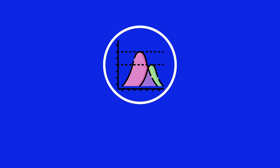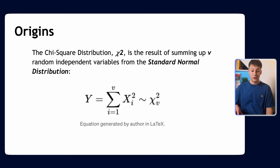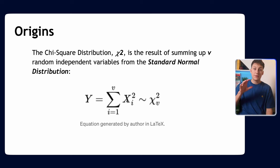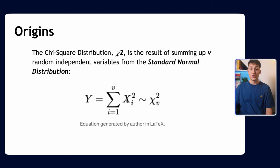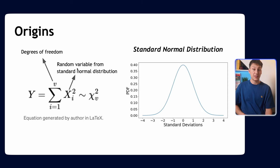The chi-squared distribution is quite simple. All it is is the result of summing up v random independent variables from the standard normal distribution, where we're squaring the variables. So we're summing up different values sampled from the standard normal distribution, squaring them, and that is the result of the chi-squared. In this case, v is the degrees of freedom — the number of values we're going to sample.